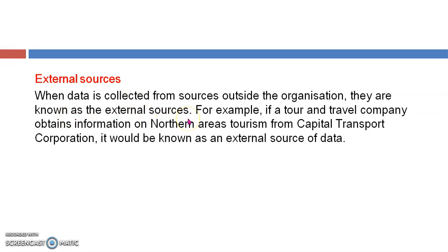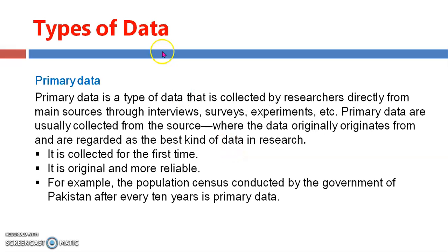When data is collected from sources outside the organization, they are known as external sources. For example, if a tour and travel company obtained information on northern areas tourism from the Capital Transport Corporation, it would be known as the external source of data. If you are making a plan to tour any northern areas, you will have to get information from the capital transport authority — that source is called the external source.